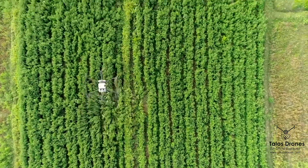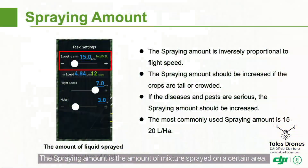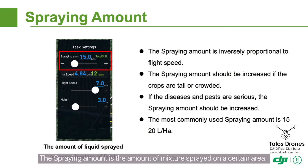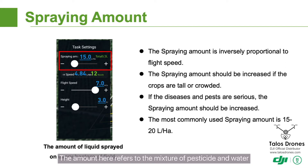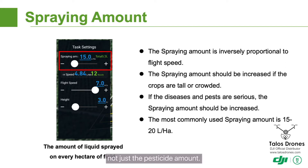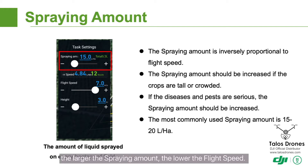Spraying amount. The spraying amount is the amount of mixture sprayed on a certain area. The amount here refers to the mixture of pesticide and water, not just the pesticide amount. As the drone has a maximum spraying speed, the larger the spraying amount, the lower the flight speed.